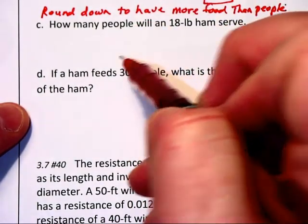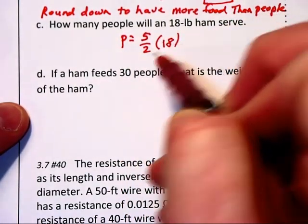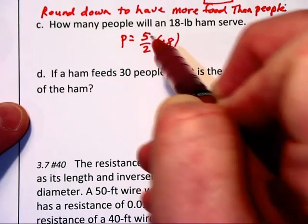This is pretty much the same thing, isn't it? P is equal to 5 halves times 18. 2 cancels with 18, leaving 9 times 5. So the answer is 45 people.